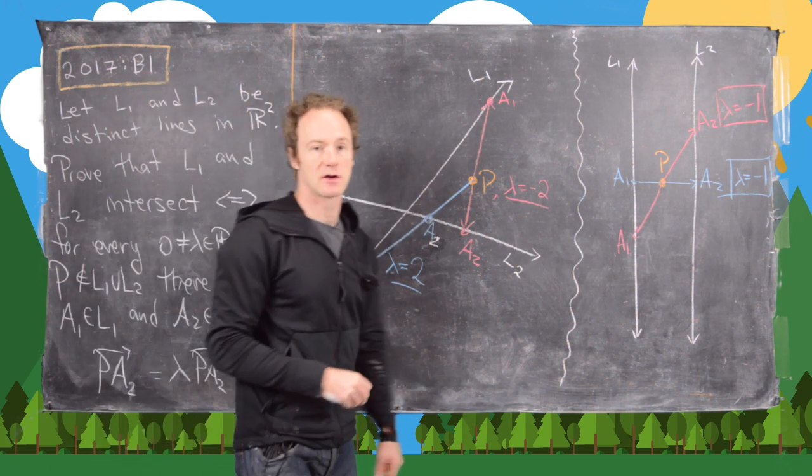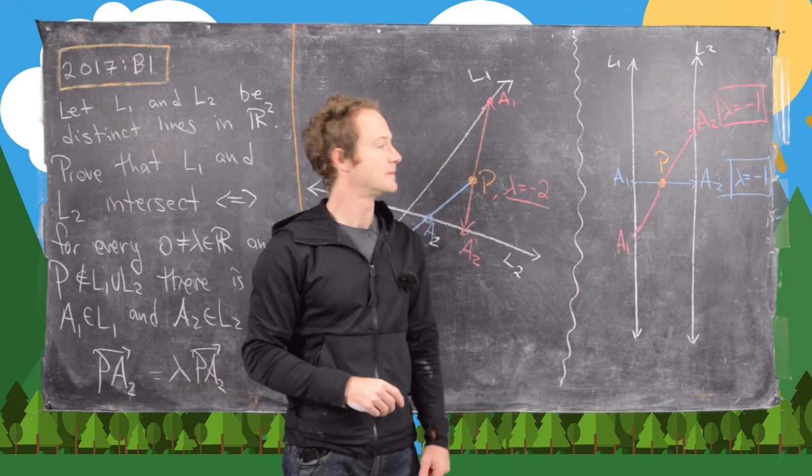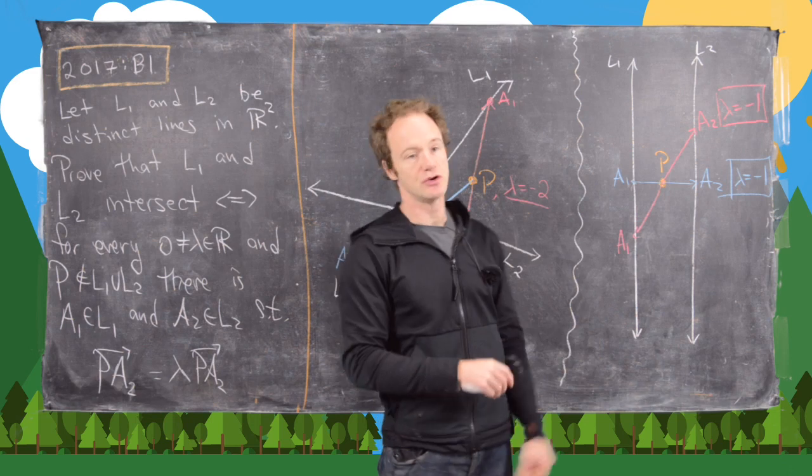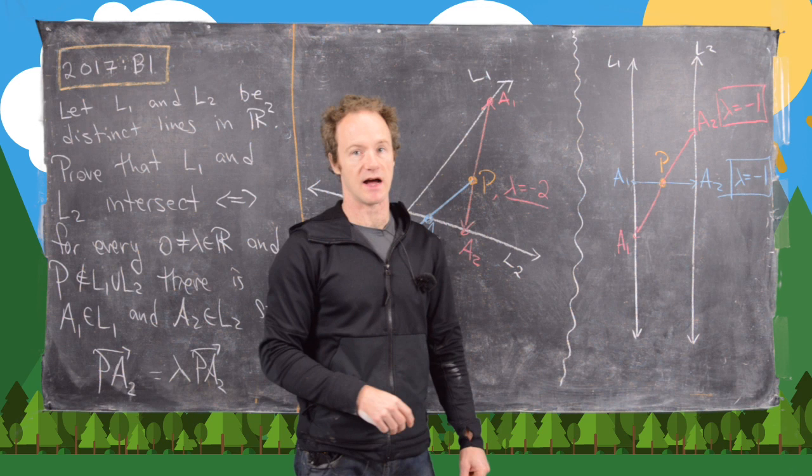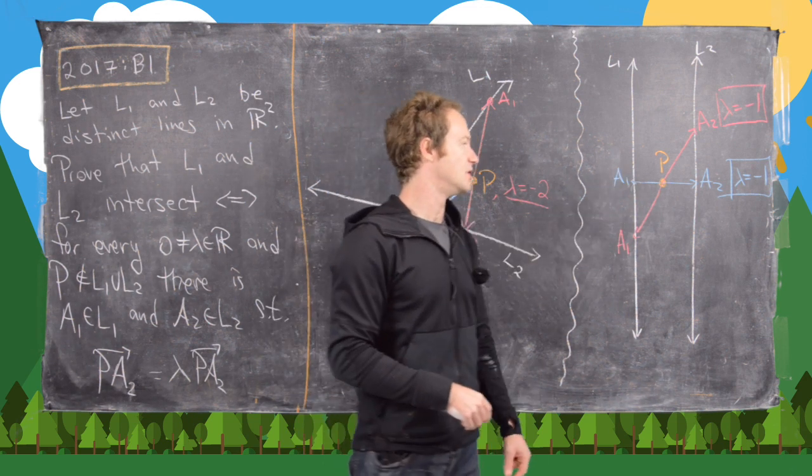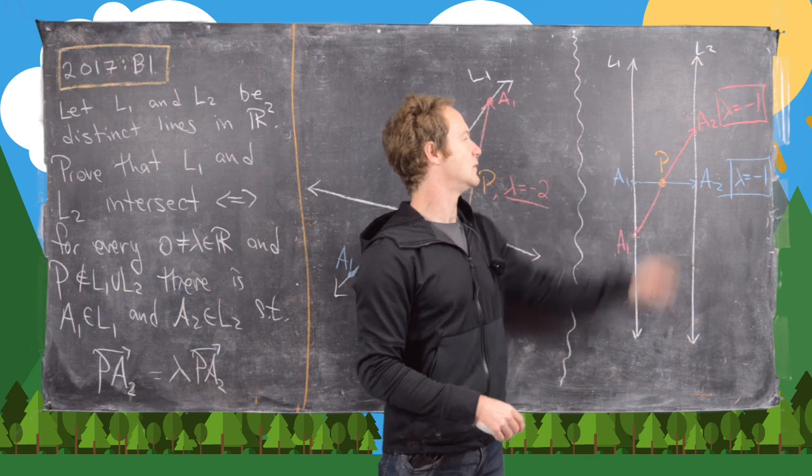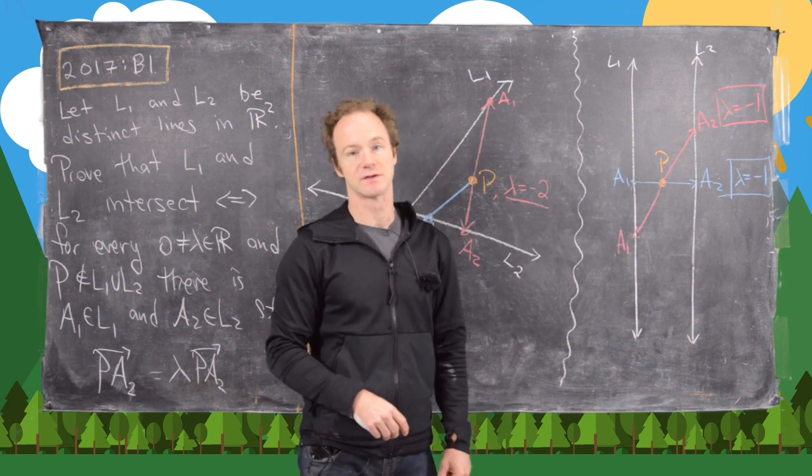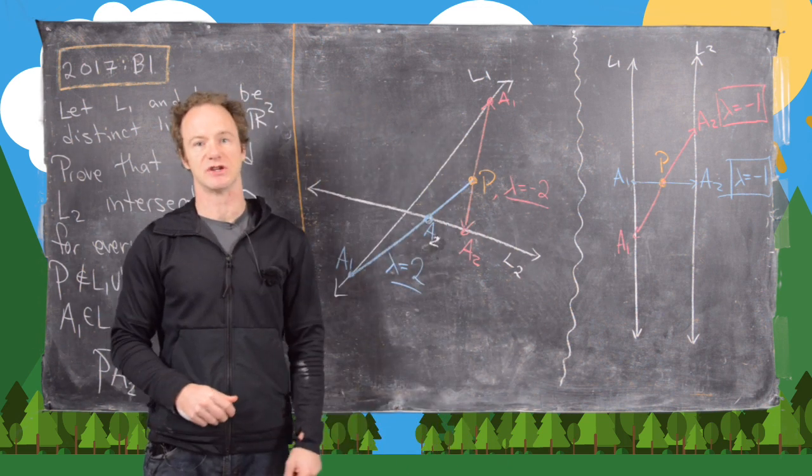Now let's look at the parallel case. In the parallel case this should be impossible, and it is if you choose your P carefully. If you choose your P exactly in the middle of the two lines, then the only lambda that you can possibly get is lambda equals minus 1. I'm going to clean up the board and then we'll look at the solution to this problem.